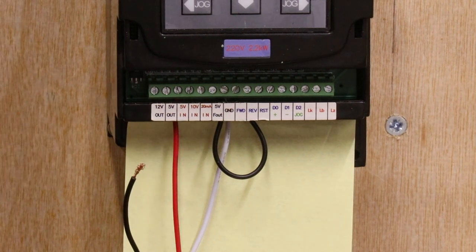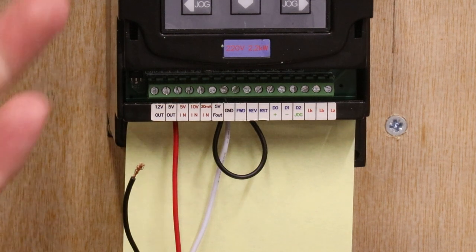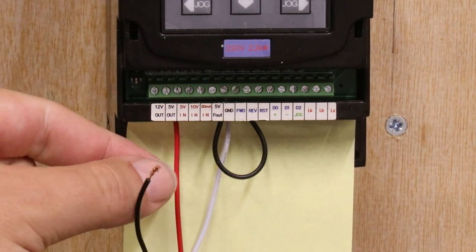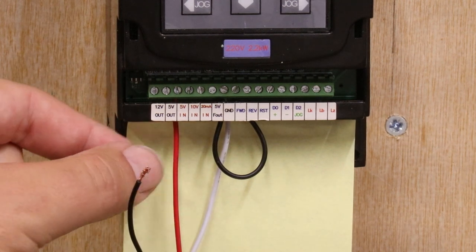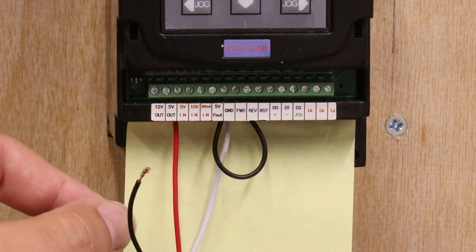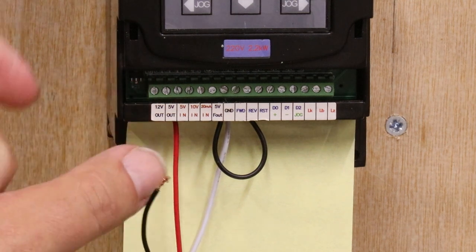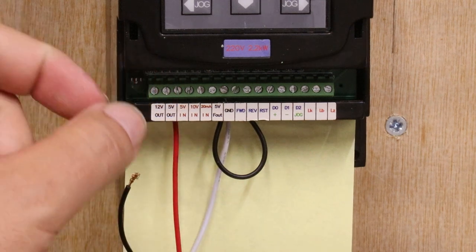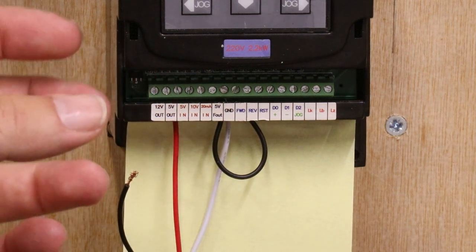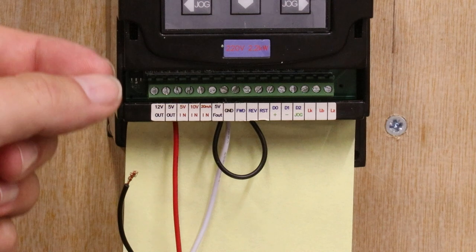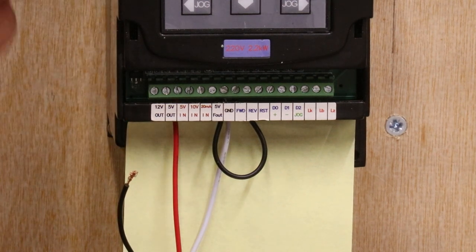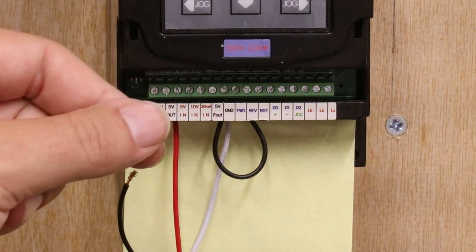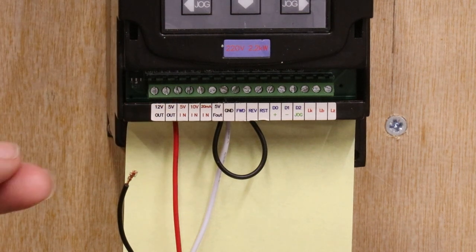Now this setup does technically work but not to the maximum potential, and I'll quickly explain why. The input voltage on the PWM cable maxes out at around 3.3, 3.4 volts. Now the VFD has a range of 0 to 5 volts for the input signal, so essentially it's only getting around three quarters of the power on the input signal that it requires.